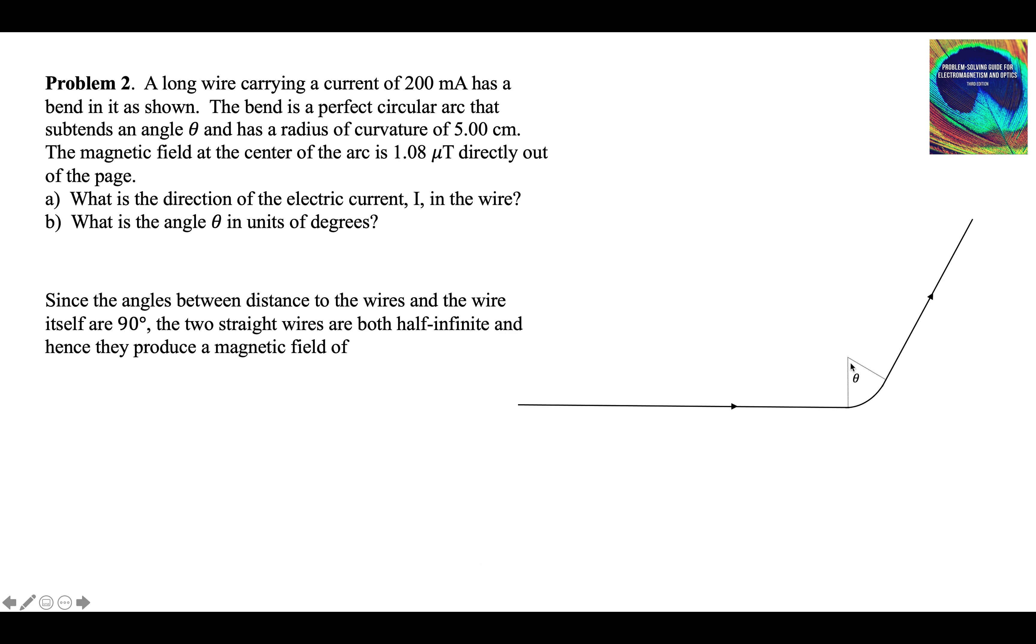The angle between this perpendicular distance and the wire is 90 degrees right here and right here. So these two wires are both half-infinite. They're long and end at the perpendicular distance. So the magnetic field from the two wires is two half-infinite wires, that's what this one is. Those are the cosines of the two angles. This is the horizontal wire here, and this is from the horizontal wire going up.